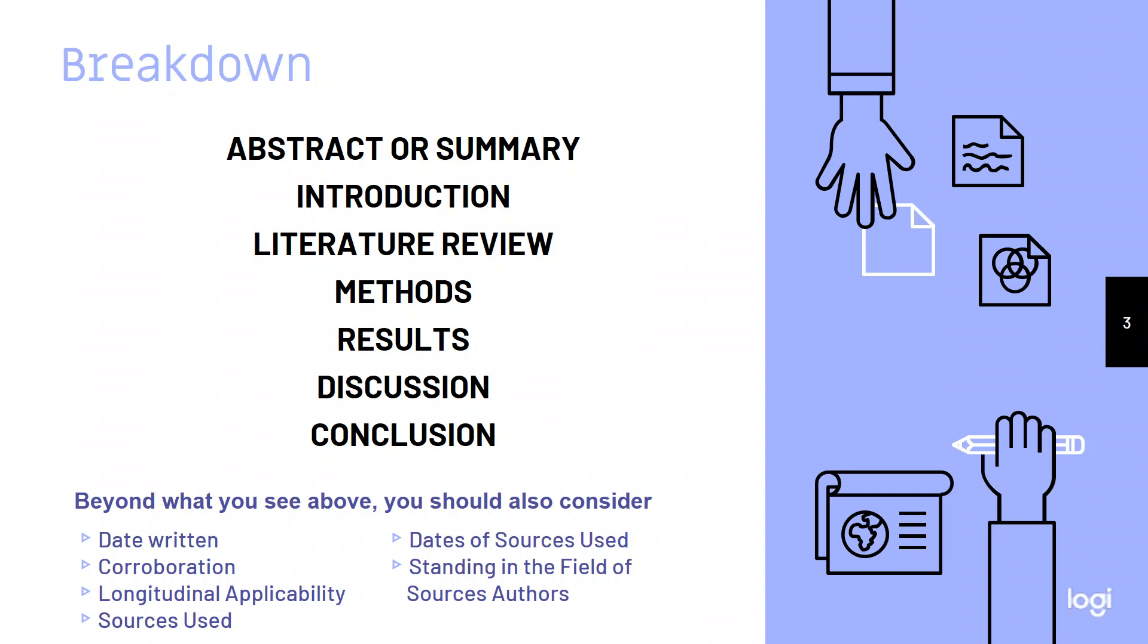You want to think of the longitudinal application. Meaning, are there studies that have been done on this issue for a long time? You may not be able to find longitudinal application on your issue specifically, but you should be able to find it in the realm of the things that you're talking about. You need to think of the sources your source is using and are the dates of those sources current? And do those sources have authors that have strong standing in the field. If your author is pulling random people from YouTube or articles that don't come from accredited bodies or peer-reviewed journals, then the things that they're writing aren't necessarily all that accurate.